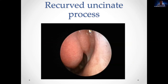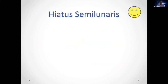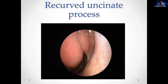Variants include the recurved uncinate process, which can occur with polypoid disease where polyps prolapsing from the maxillary sinus push the free edge forward. This is sometimes called the 'double middle turbinate' due to its appearance.